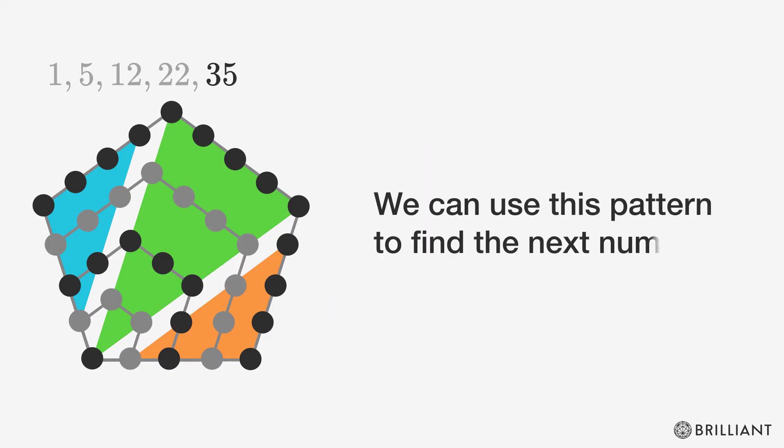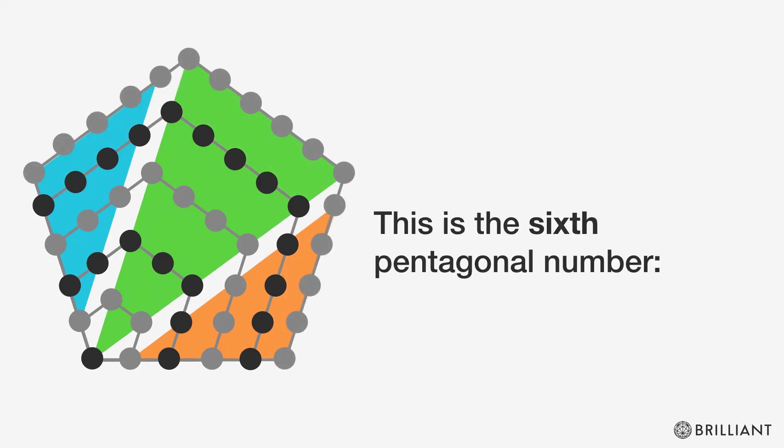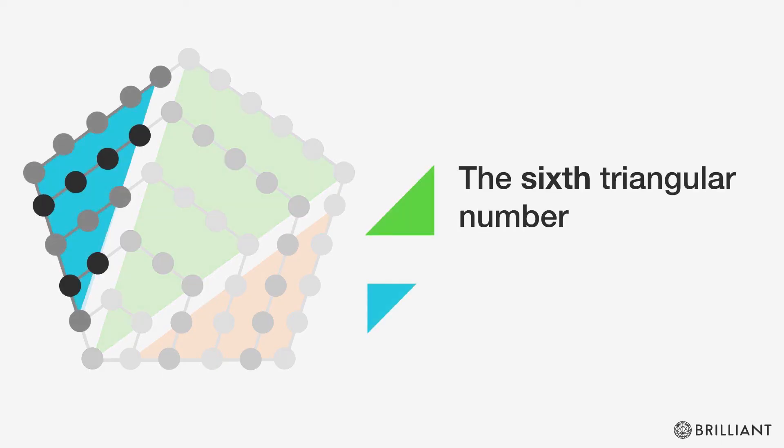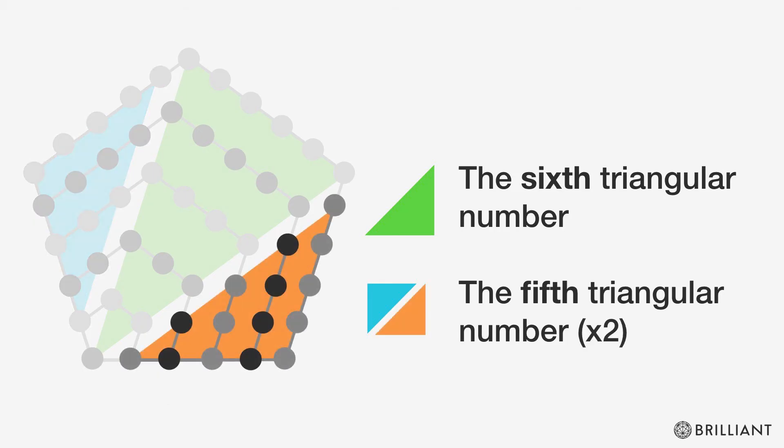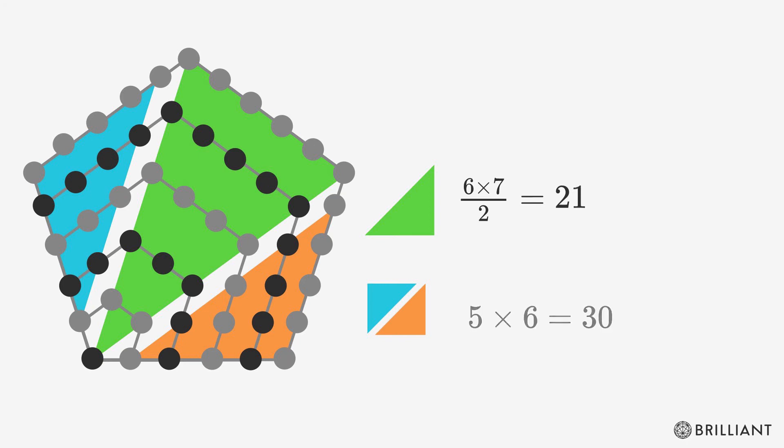We can use this pattern to find the next number in the sequence as well, which is the sixth pentagonal number. The sixth pentagonal number is composed of the sixth triangular number and the fifth triangular number times 2. Again using the formula from before we can find these numbers and add them up to find the answer 51.